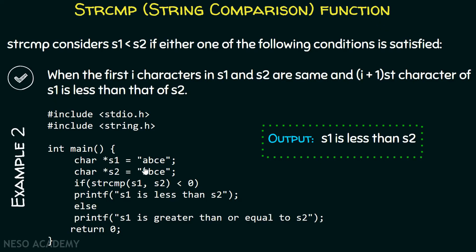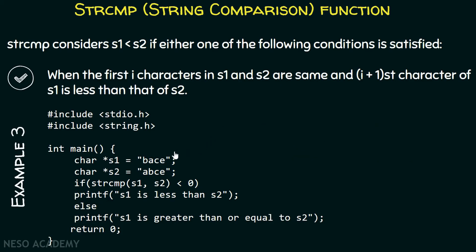If the first character itself is not matching, we just check which character is less than the other to reach a conclusion. In the third example, s1 is 'bace' and s2 is 'abce'. The first character b is greater than a, so s1 is greater than s2. strcmp returns a value greater than zero, and the else branch is evaluated, printing 's1 is greater than or equal to s2'.